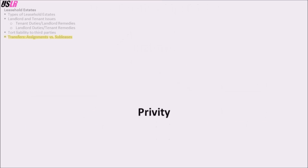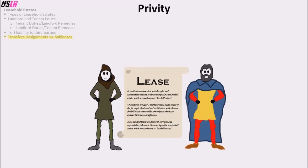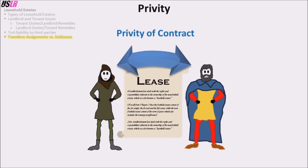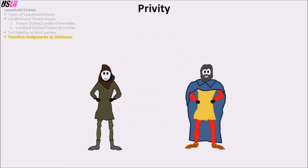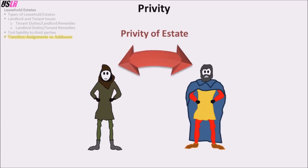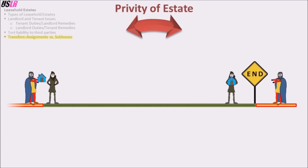Since the lease agreement is a contract, there is a contractual relationship known as privity of contract, which exists between two parties who contract with each other. Since there are also property interests, there is a property relationship known as privity of estate, which exists between two parties who have a successive interest in the same property. For example, a landlord and tenant have privity of estate because their interests are successive: the tenant has the leasehold estate, which is followed by the landlord's reversion.